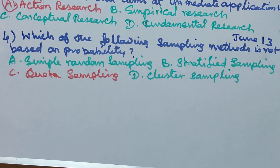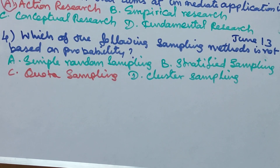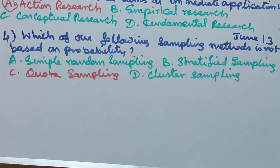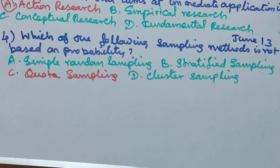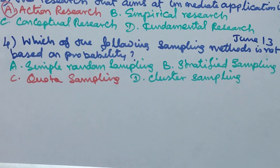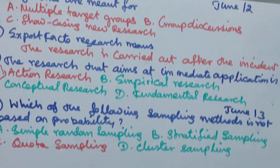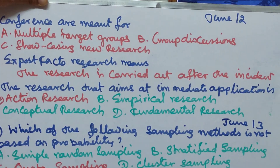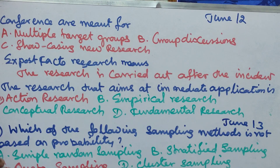Among these, all others are probability-based. Quota Sampling uses a selection method and is not based on probability. Therefore, the correct answer is Quota Sampling.